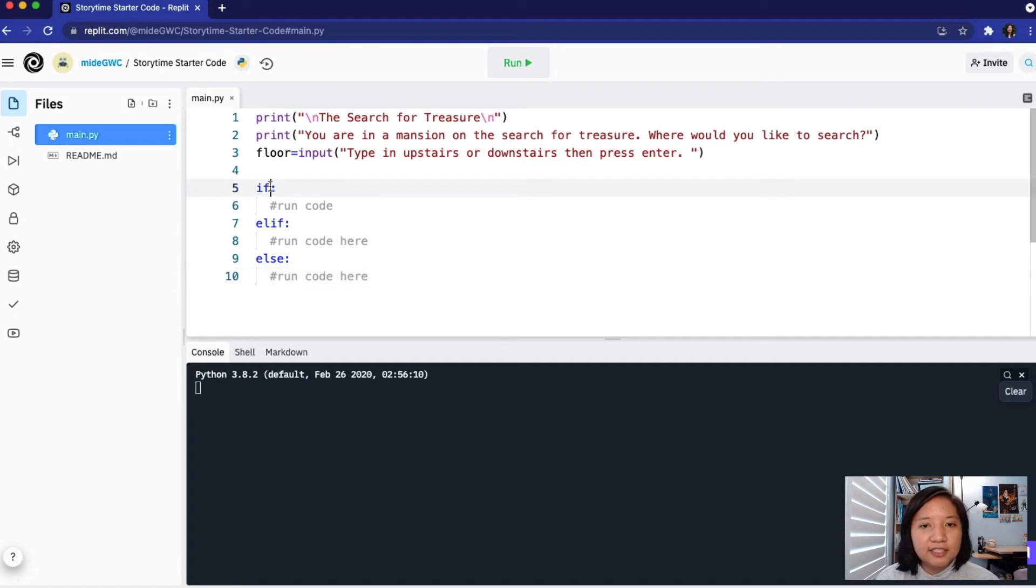After the if statement but before the colon, we will add a space and type the name of the variable floor double equal sign and quotes upstairs to see if the user typed in the string upstairs. That is our first condition.